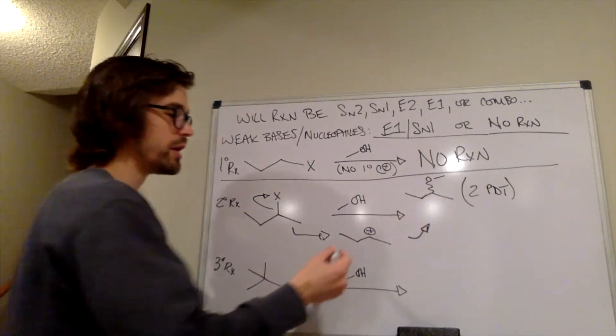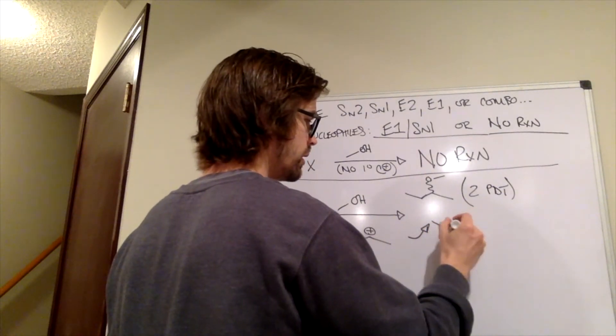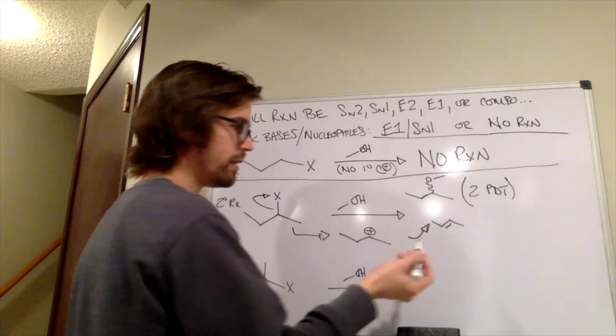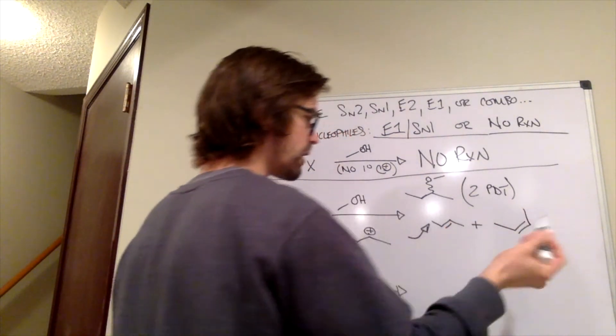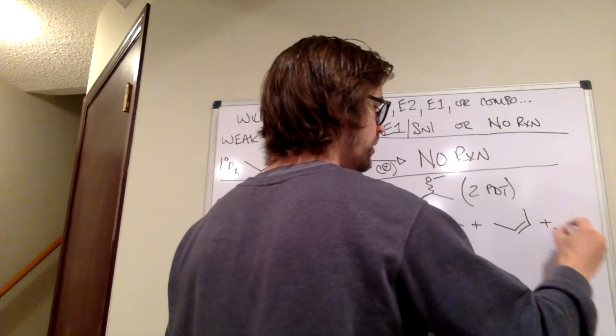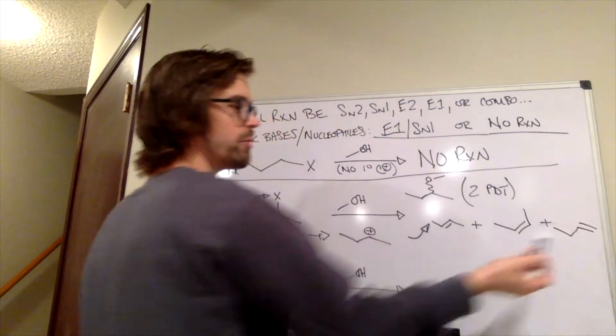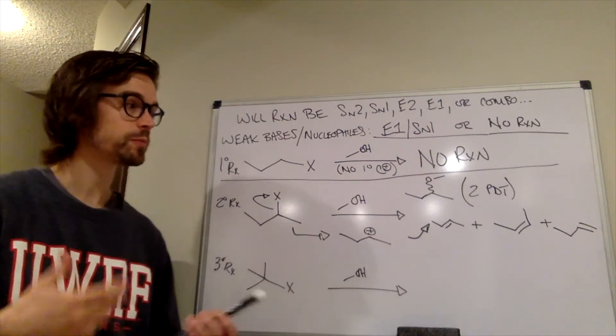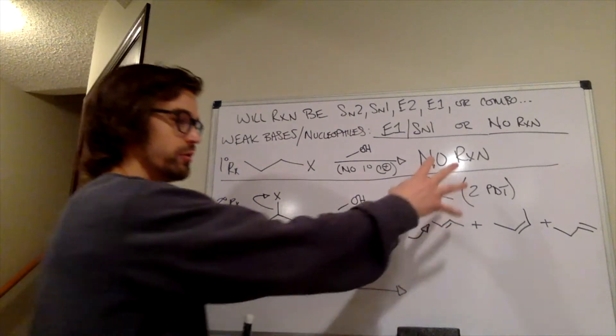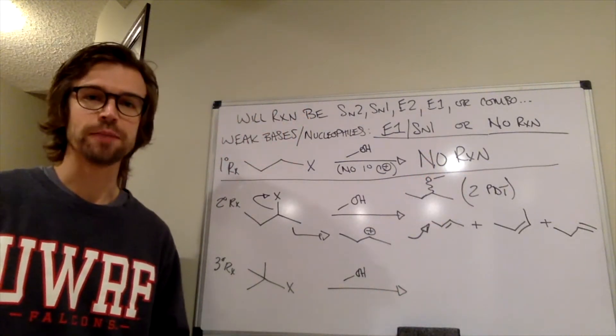What else? Well, we can eliminate to form the alkene that looks like that. That would be our trans-alkene. We can eliminate to make the cis-alkene. And we can also eliminate, and some of this will happen, it's going to be by far the most minor product. We can also form that monosubstituted alkene. So since we technically have a mixture of five molecules, this isn't going to be a very good reaction pathway.